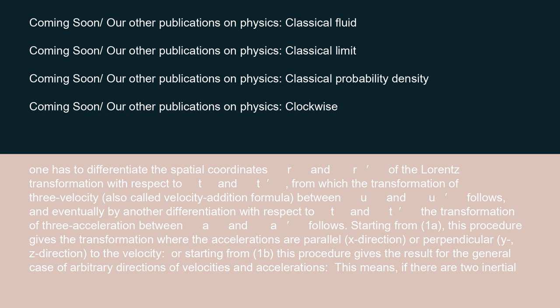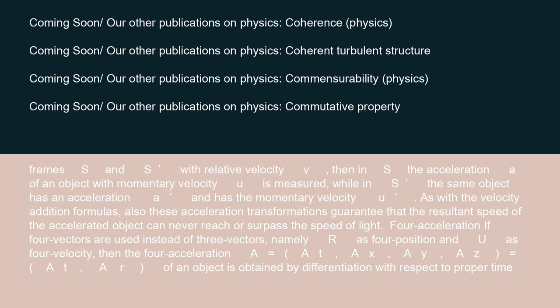This means, if there are two inertial frames S and S′ with relative velocity V, then in S the acceleration of an object with momentary velocity U is measured, while in S′, the same object has an acceleration and momentary velocity U′. As with the velocity addition formulas, these acceleration transformations guarantee that the resultant speed of the accelerated object can never reach or surpass the speed of light.